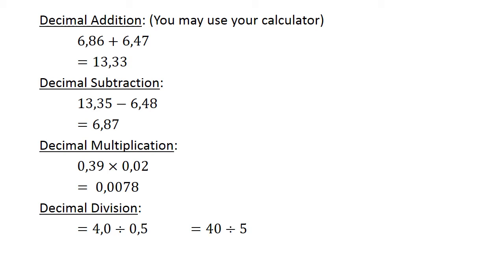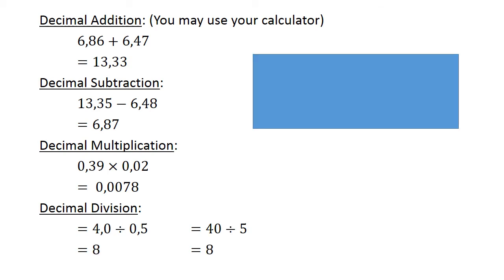Decimal division. 4.0 divided by 0.5. Multiply both with 10 to get whole numbers. 40 divided by 5 equals 8.